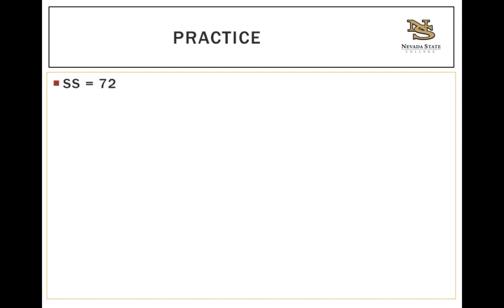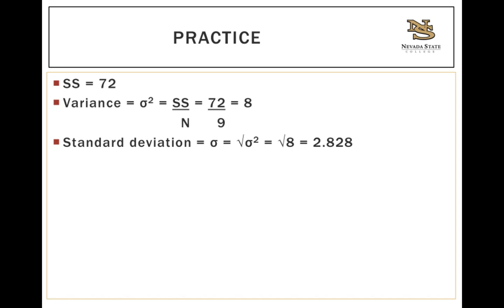Now that we have our sum of squares as 72, we can find our variance. Remember, we're going to represent that with little σ², and the formula is simply your sum of squares divided by big n. That means our sum of squares is 72 divided by 9, giving us a variance of 8. But keep in mind we're not quite done. We need to find the standard deviation. The standard deviation, represented by little σ, is simply the square root of our variance. In this case, our variance is 8, so the square root of that is 2.828.